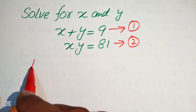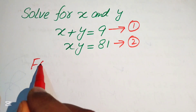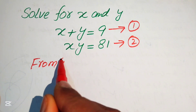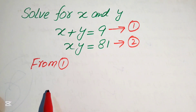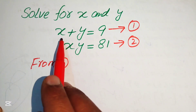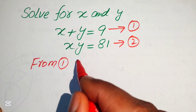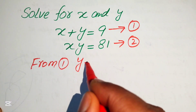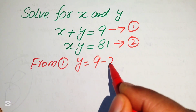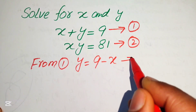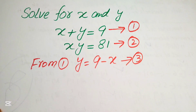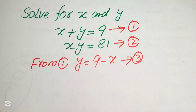We focus on equation 1 first. From equation 1, we move x to the right-hand side and we get y equals 9 minus x. We call this equation 3.